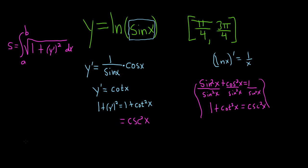Let's go back to our integral. So lowercase s, we're integrating from a to b: our a is pi over 4 and our b is 3 pi over 4. It's the square root of cosecant squared x dx.